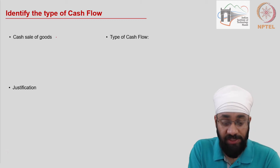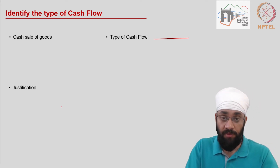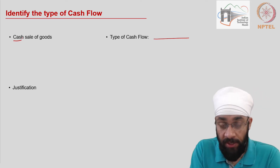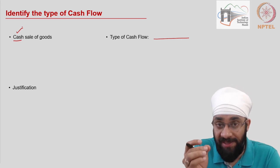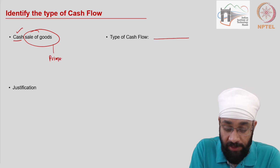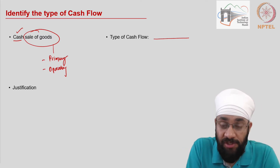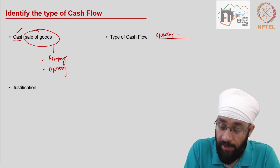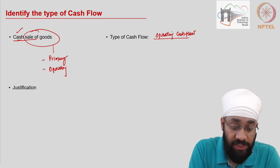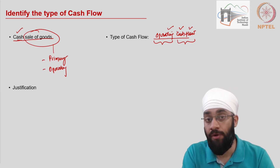For cash sale of goods, we need to determine which type of cash flow this is. Cash sale clearly means cash is coming in, so this qualifies as a cash flow. Sale of goods is the primary activity of the business and hence an operating activity. Cash coming into the business due to sale of goods is called operating cash flow — cash flow because cash is coming in, operating because this is an operating activity.